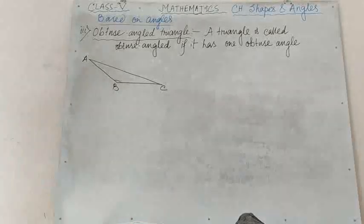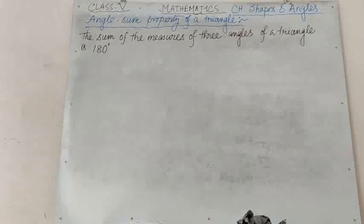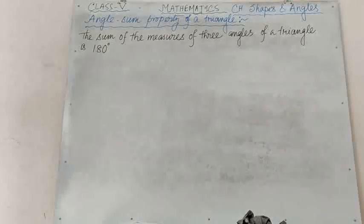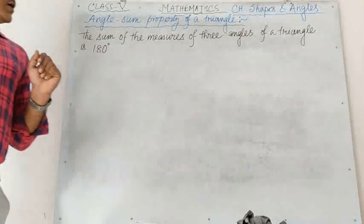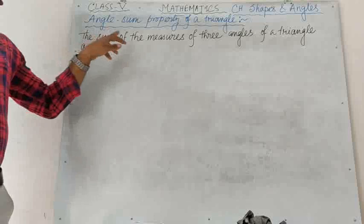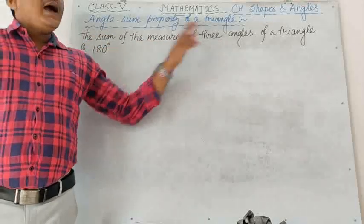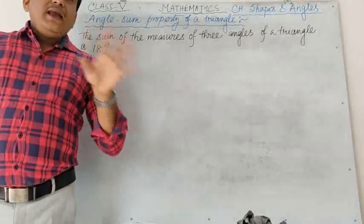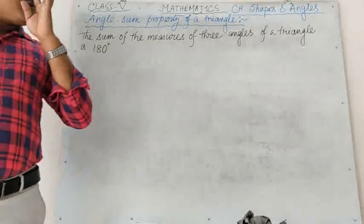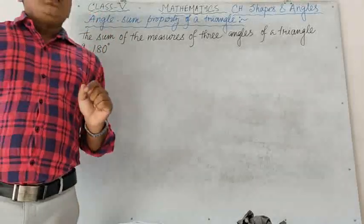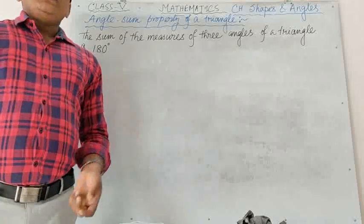Next is the angle sum property of a triangle. The sum of the measures of three angles of a triangle is 180 degree. This is very important — everyone keep in mind. For any kind of triangle, the sum of three angles is always equal to 180 degree.